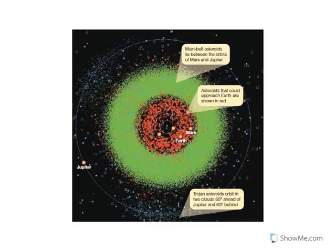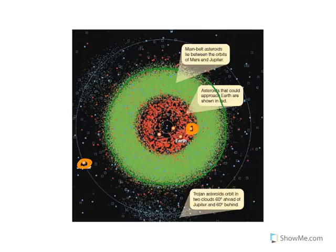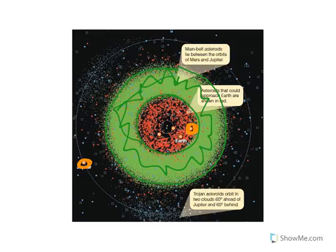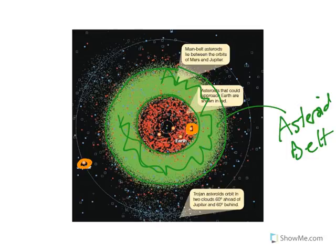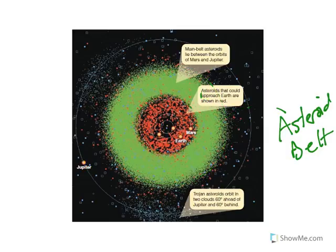Now let's look at the asteroid belt. Here's another diagram from your textbook, which plots the position of the known asteroids between the sun and the outer orbit of Jupiter. Most of the asteroids are in the asteroid belt, shown in the color green. Here is the location of Mars on the inner portion of the belt, and here is the location of Jupiter on the outer portion. Most of the asteroids lie within this green region. Not all asteroids lie in the asteroid belt — some lie just ahead of and just behind the orbit of Jupiter, called the Trojan asteroids.